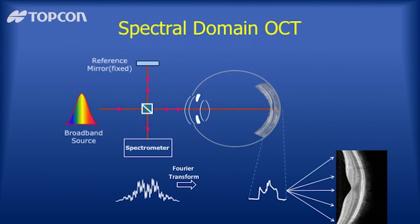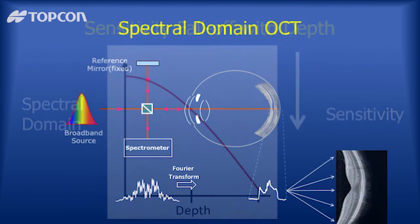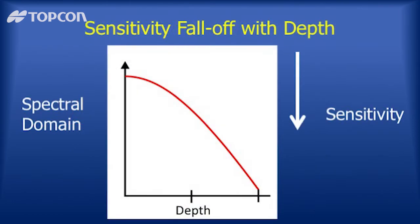Swept source OCT has many different reflections going on all at once, so the interferogram is fairly complicated. But this can be decoded by a Fourier transform to make an A-scan, and many A-scans together make a B-scan. The ingenuity of swept source OCT is that everything is depth-encoded in terms of interferogram frequency, but this is also a weakness, because in spectral domain OCT the detection method is not sensitive to high-frequency interferograms, causing a fall-off in sensitivity with depth.